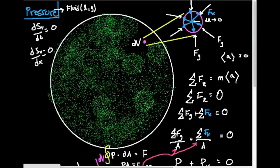I'm going to pick an infinitesimally small point dV — a small spherical volume — and blow it up to examine it. So this is an infinitesimally small spherical segment dV with radius dr, which also approaches zero. What you have to imagine is that at this point, gas molecules are literally on average hitting this dV from all directions.